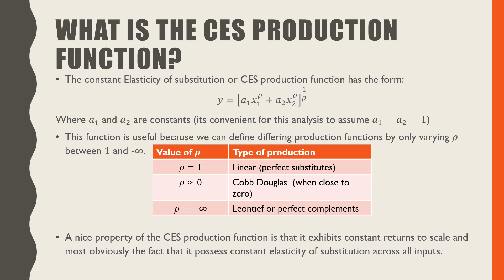If our value of rho is equal to 1, we have linear or perfect substitutes in our type of production. If rho is approximately 0, we have something that looks like a Cobb-Douglas type of production function.